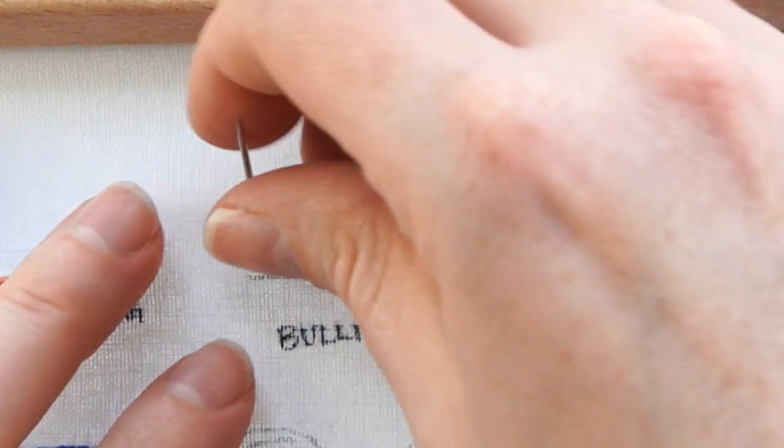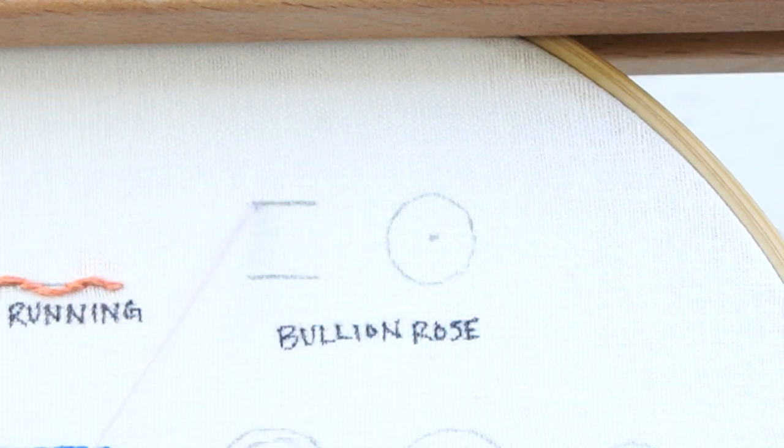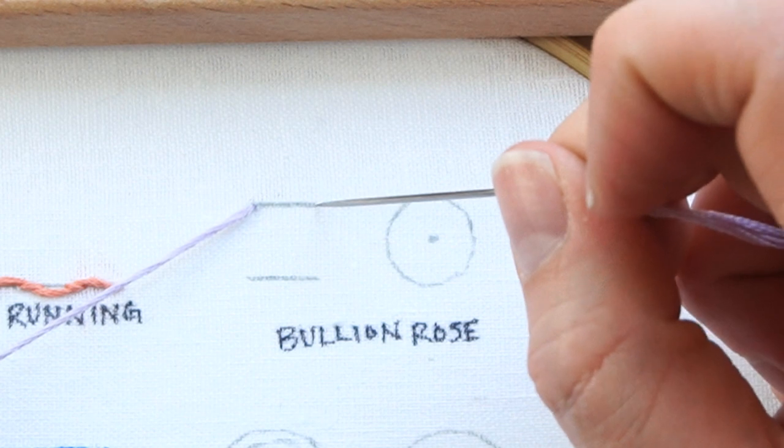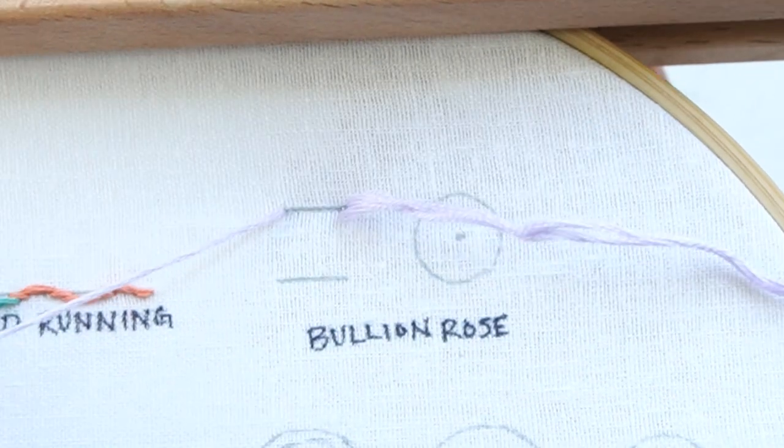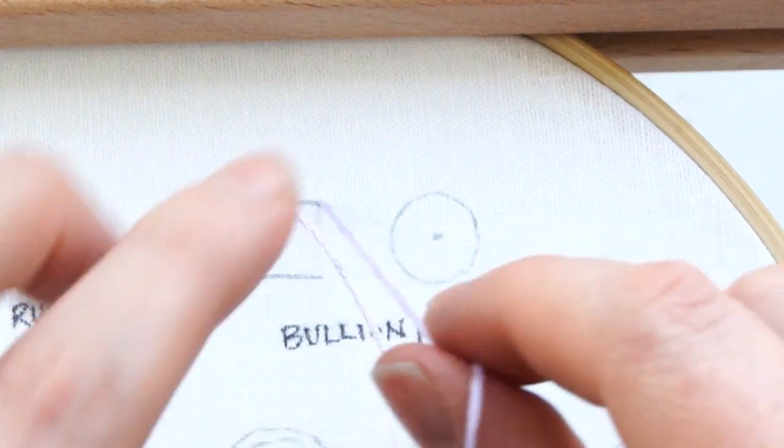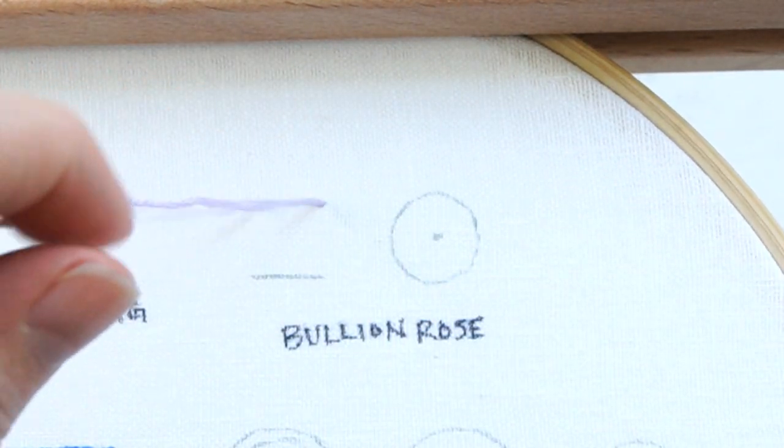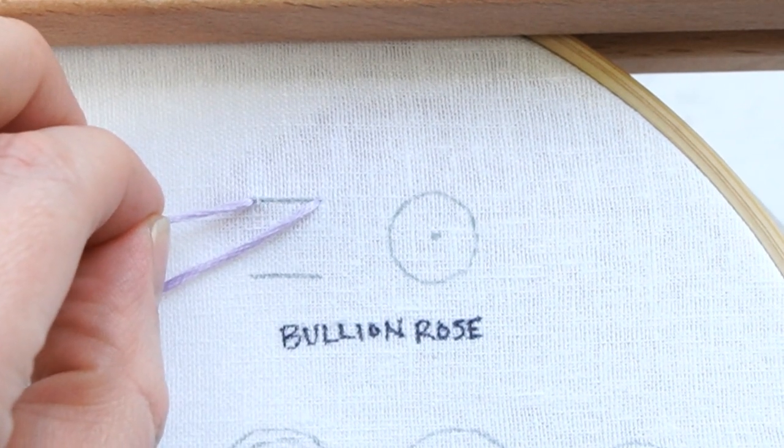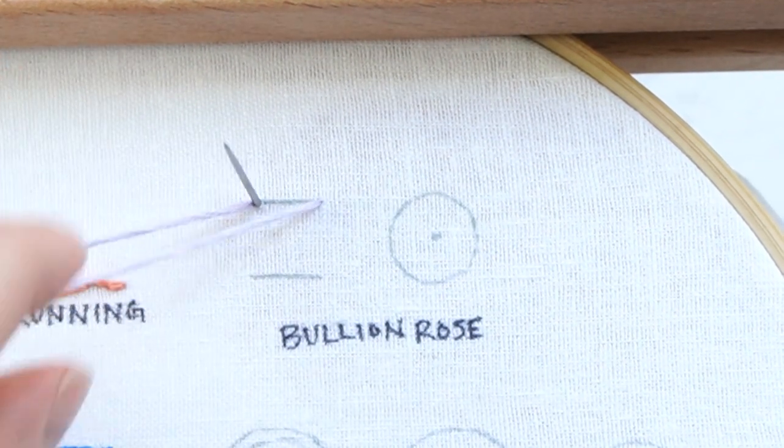Bring your needle up through the back at the beginning of the line, then go to the end of your line and bring your needle down, but don't pull it all the way through. Leave a good-sized loop there. Then go back to your starting point and bring your needle up again.